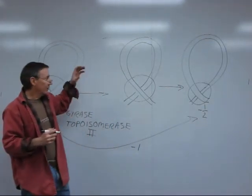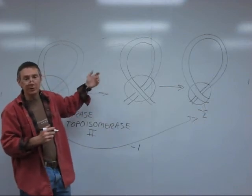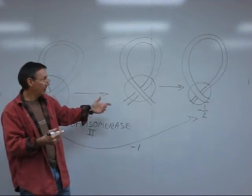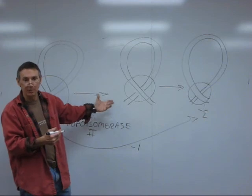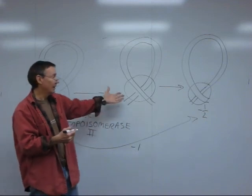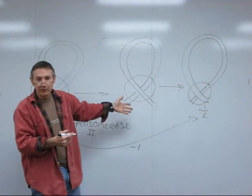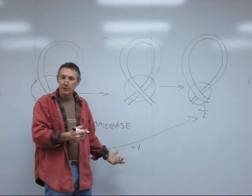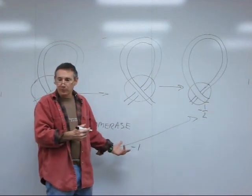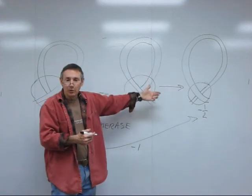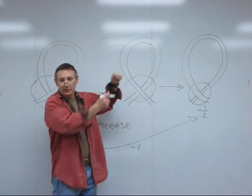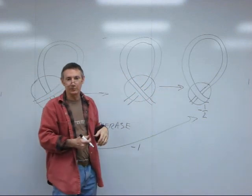In other words, gyrase has now taken out one complete 360 degree rotation, or one positive supercoil, by introducing one negative supercoil. Gyrase acts out on the DNA molecule in advance of the replication fork, and it's going to wind up taking out all of those twists as they're introduced by separating the DNA strands.